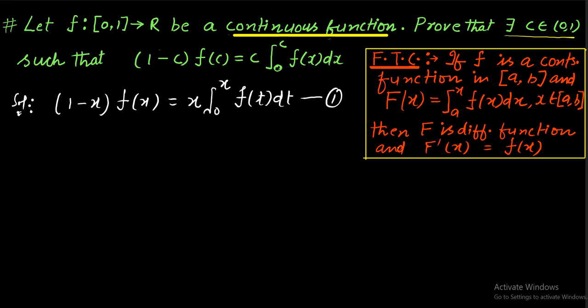Observe the question. By observing, we can conclude we have to prove that there exists the root of equation (1-x)f(x) = x∫₀ˣf(t)dt. I am changing the variable. In place of x, I am taking t. If we want to prove root, it means it is either application of intermediate value theorem or Rolle's theorem. IVT is not working here. It means it is application of Rolle's theorem.